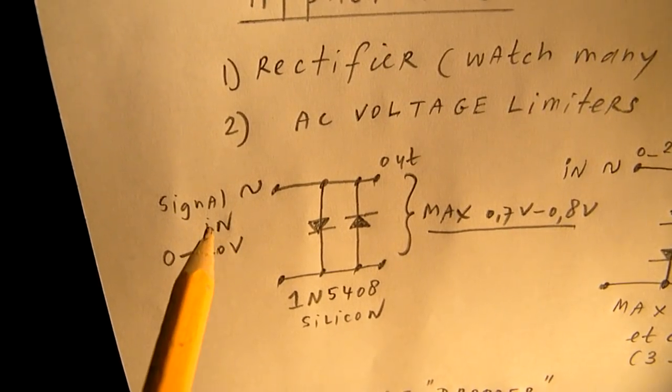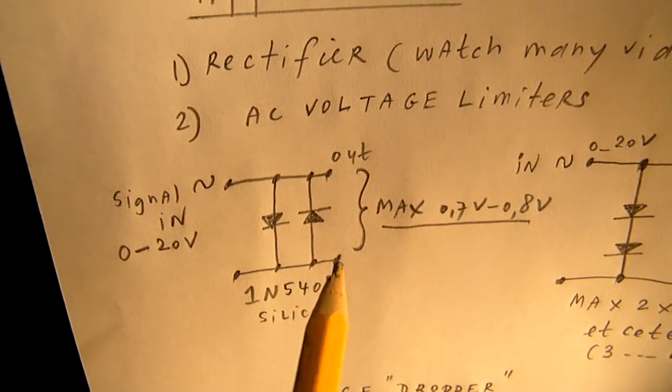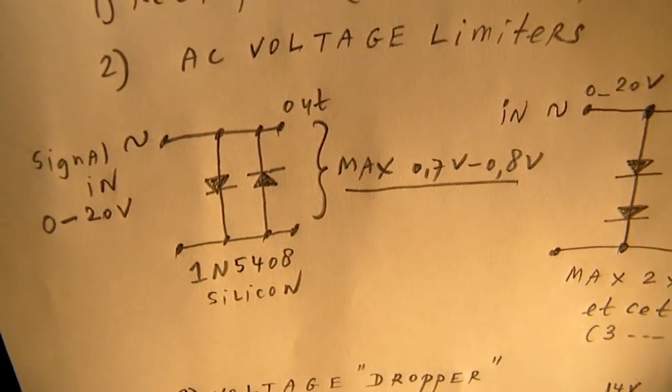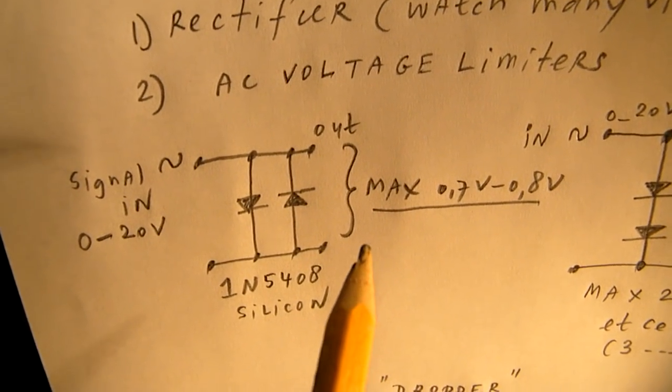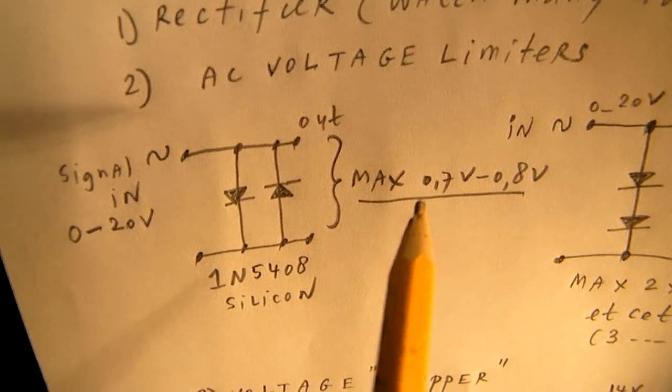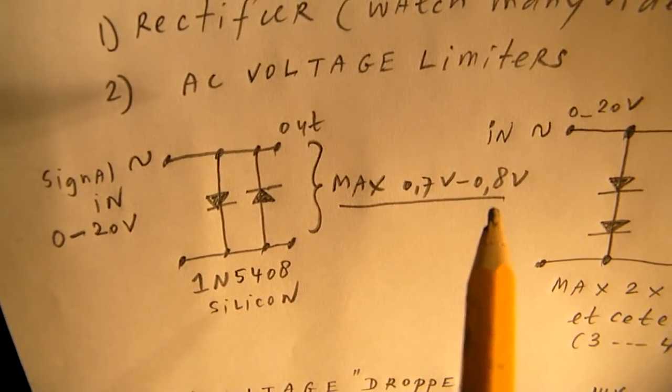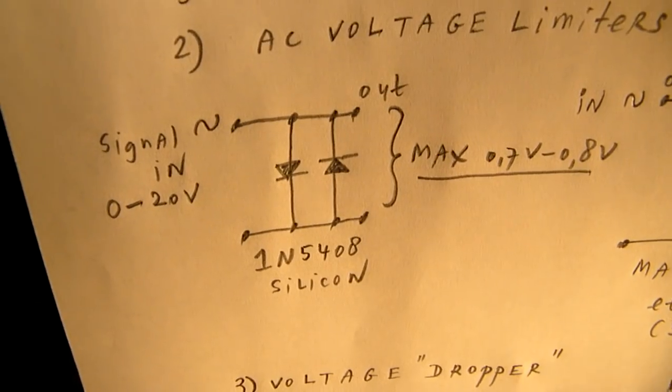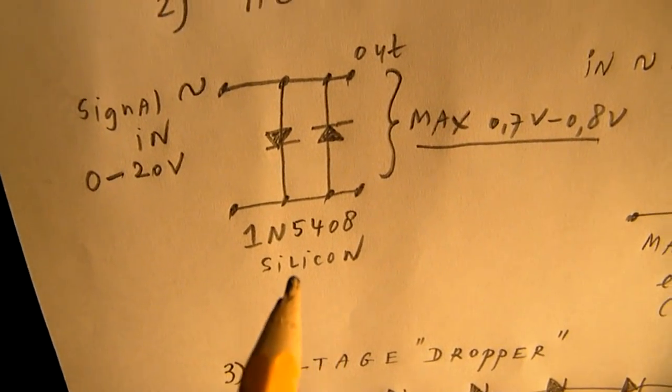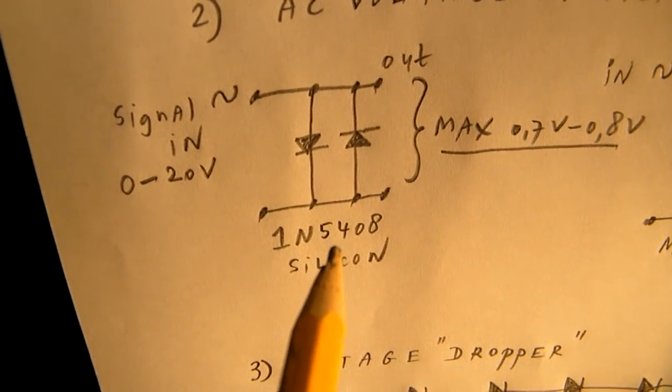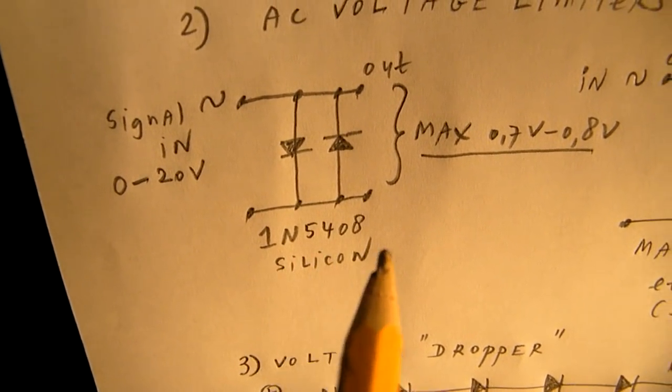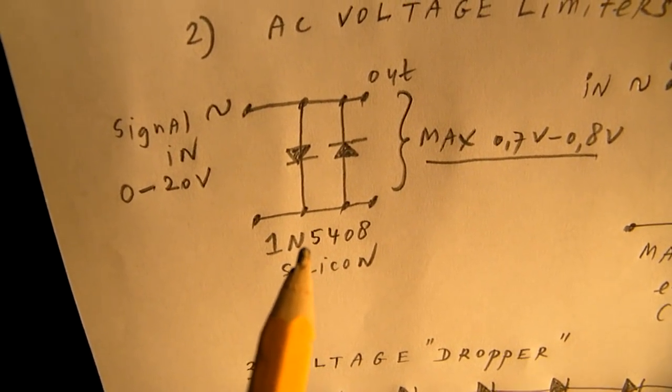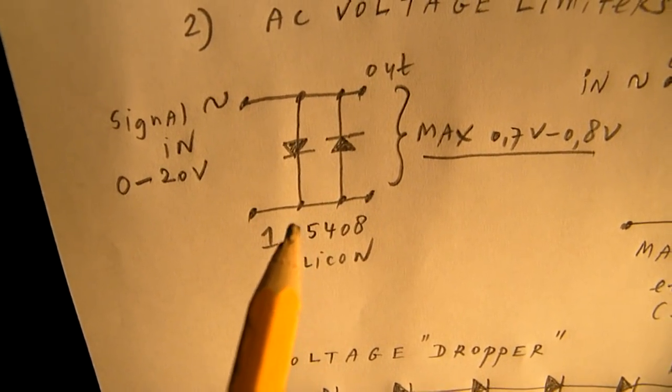So when you have here 20 volts or so, you will always find here a voltage from approximately 0.7 up to 0.8 volts. Of course, only when you use a silicon diode, and this could be a good choice for an experiment, the 1N5408, a quite sturdy silicon diode.